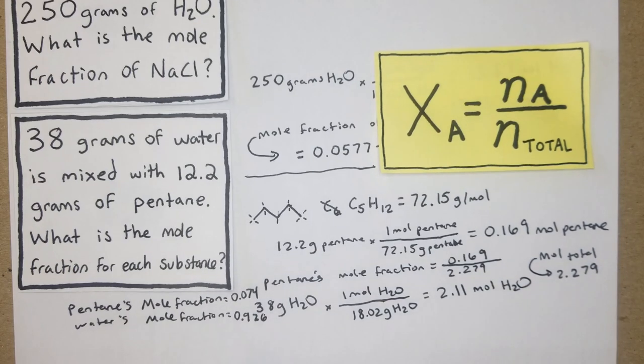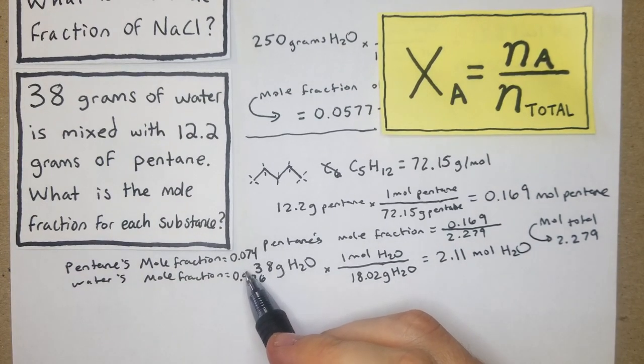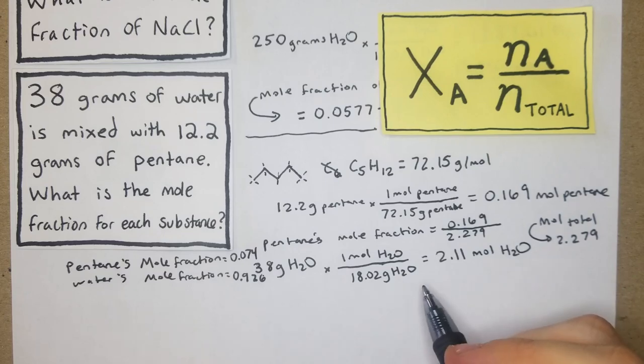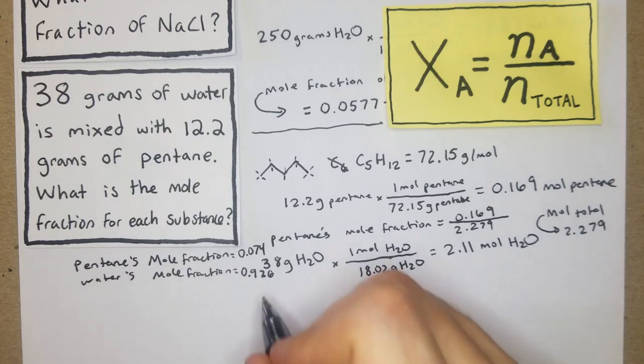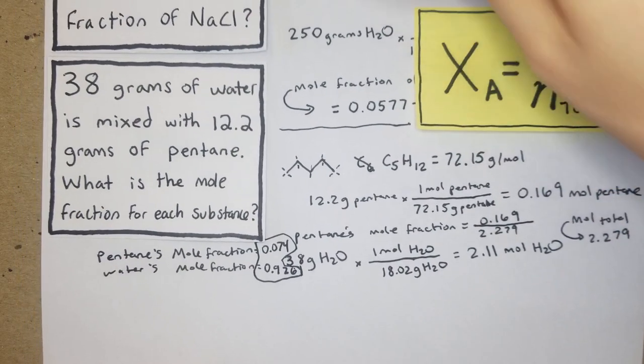Essentially what we have in this circumstance when there's only two substances and we're asked to find both of them - what we could have done is take the mole fraction of pentane and then just subtract that from one. So you take 1 minus 0.074 and that's what you'll get. A good way to double check these questions is do it one way and then do it the other way. Your mole fractions should always add to one, so that's a good way to double check yourself.